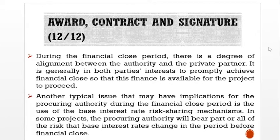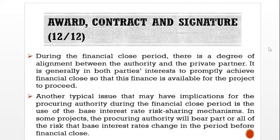During the financial close period, there is a degree of alignment between the authority and the private partner. It is generally in both parties' interest to promptly achieve financial close so that finance is available for the project to proceed. Another typical issue that may have implications for the procuring authority during the financial close period is the use of base interest rates risk-sharing mechanisms. In some projects, the procuring authority will bear part or all of the risk that base interest rates change in the period before financial close.